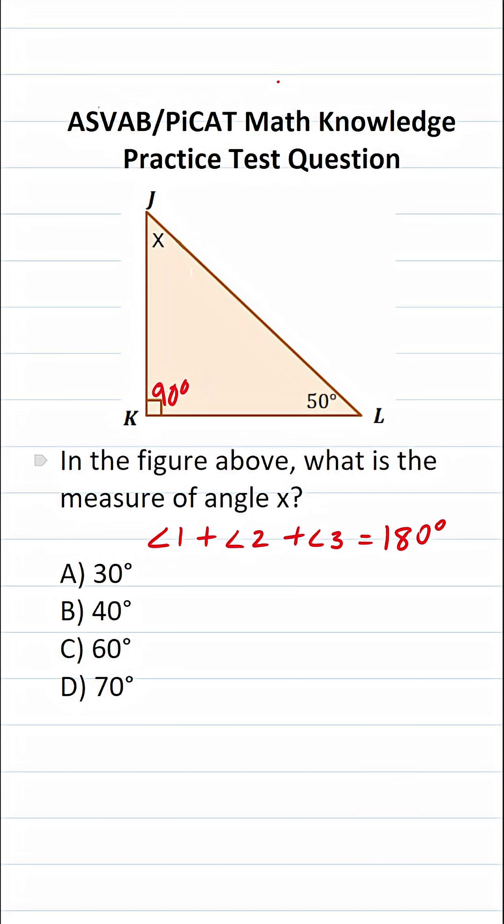So we can use this information to solve this one because I can let the measure of angle 1 be 90 degrees, the measure of angle 2 be 50 degrees, and the measure of angle 3 be X degrees. So let's plug these in and solve accordingly.